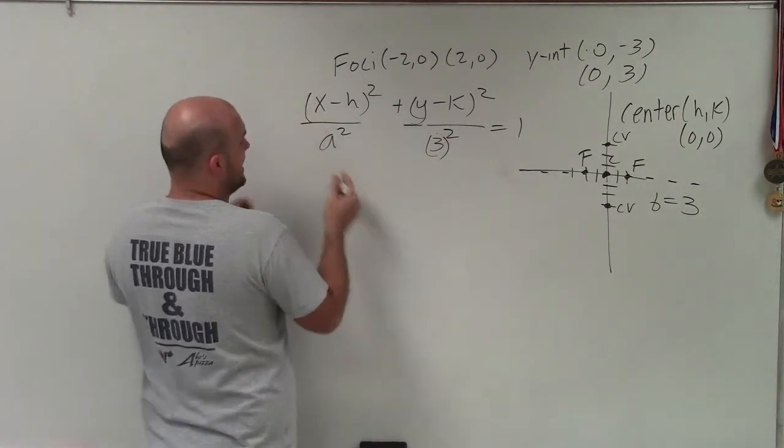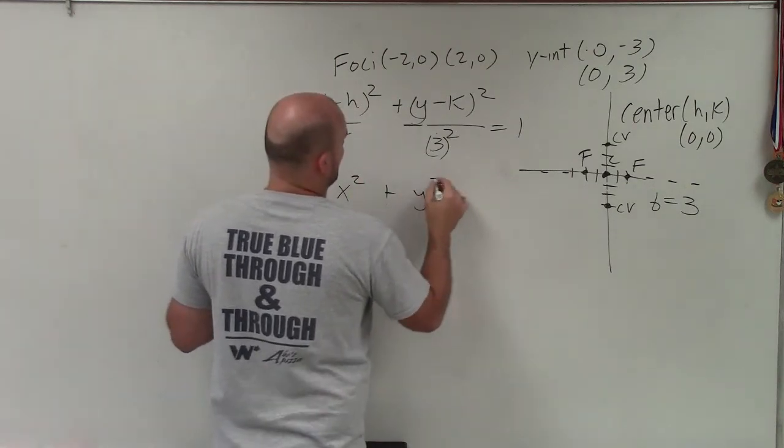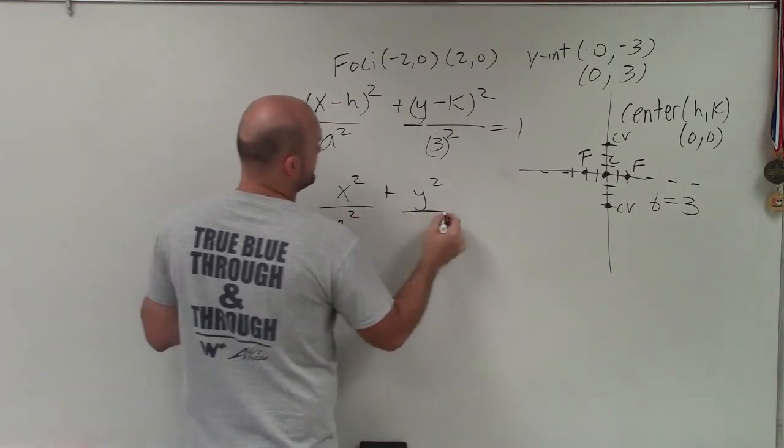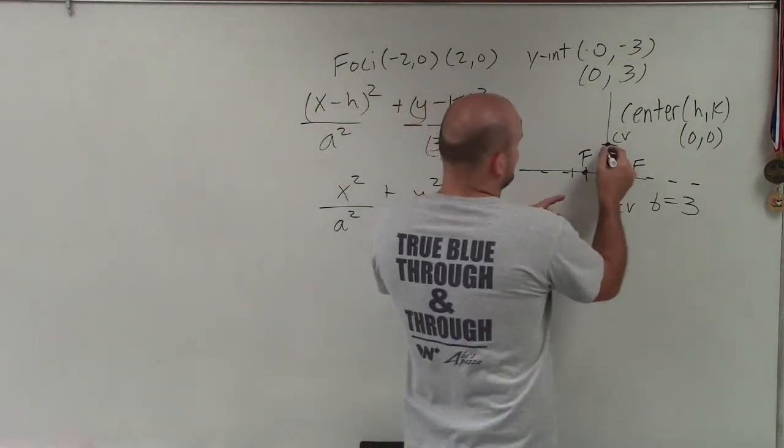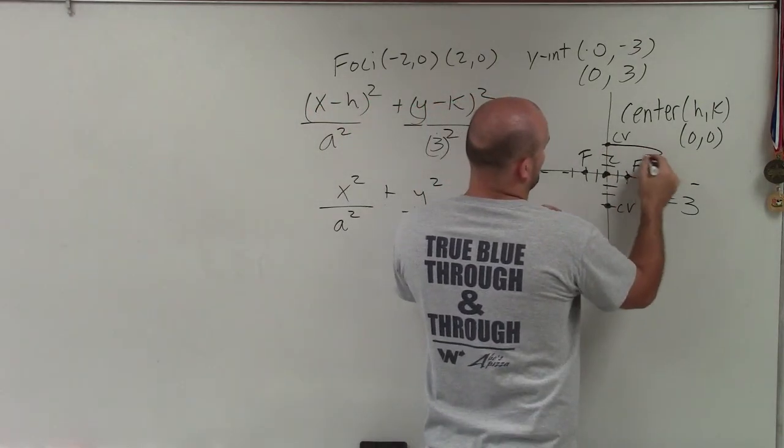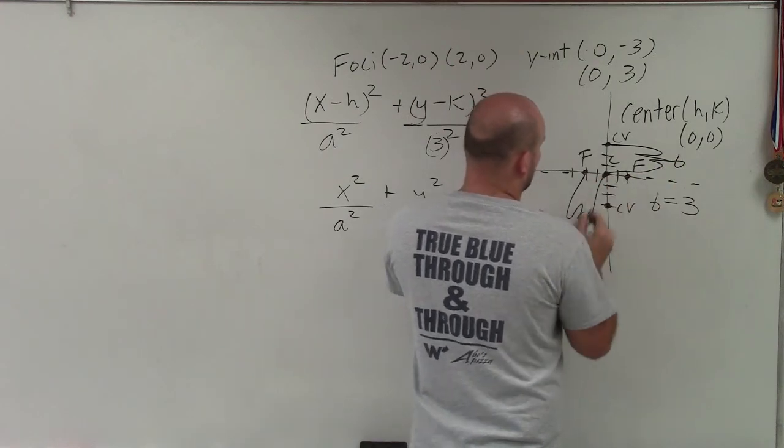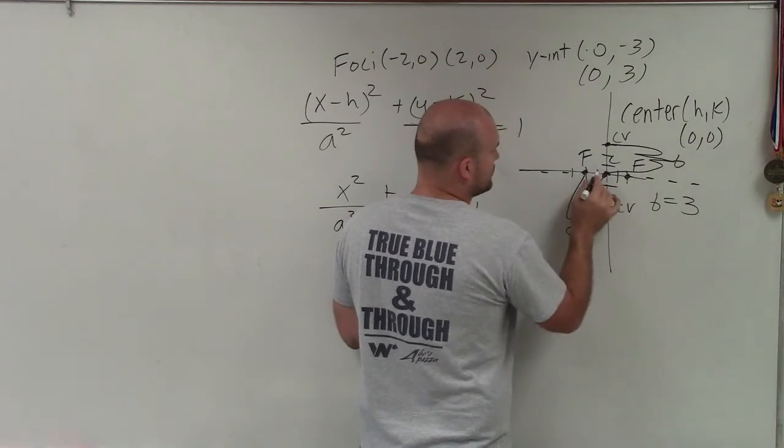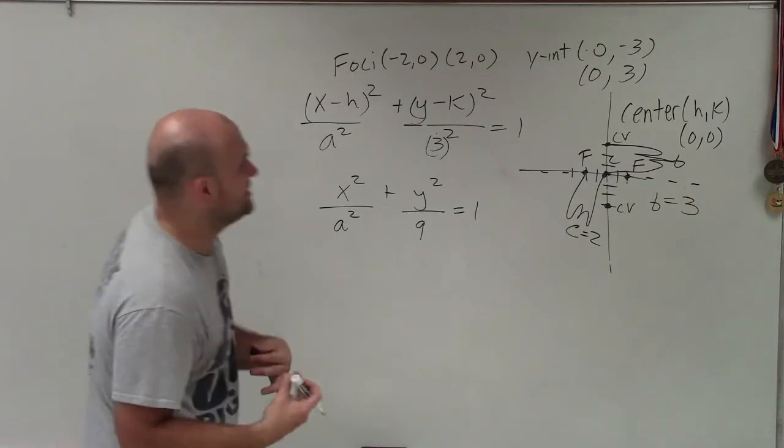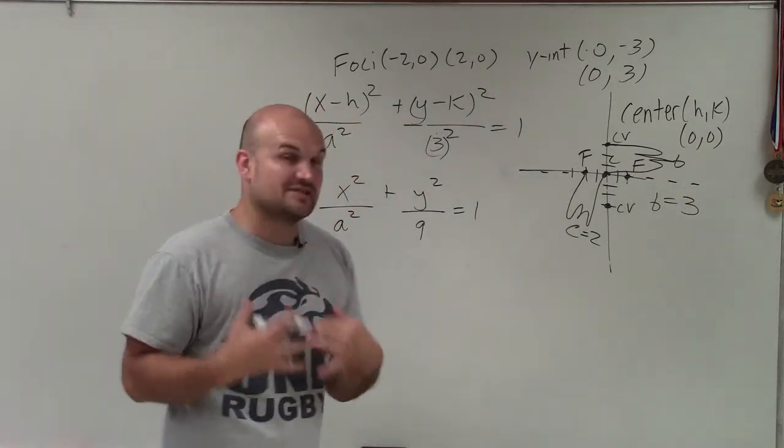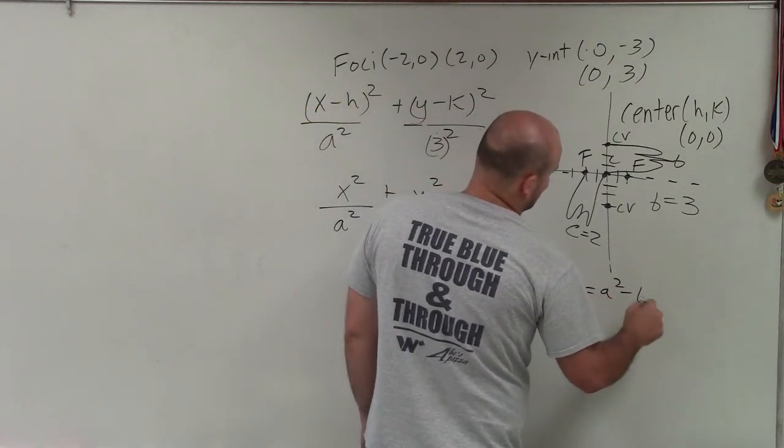Now we just need to determine what a is. We have x² / a² + y² / 9 = 1. We know the distance from the center to the foci is c, which is 1, 2, so c equals 2. We have b equals 3. When dealing with ellipses, there's a relationship between a, b, and c: c² = a² - b².